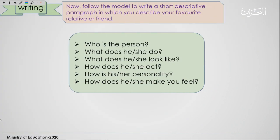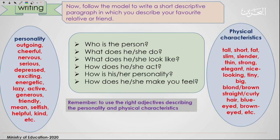Now follow the model to write a short descriptive paragraph in which you describe your favorite relative or friend, answering the set of questions. Remember to include both the personality and the physical characteristics while answering these questions. I'm expecting you to spend around five to seven minutes writing this paragraph.